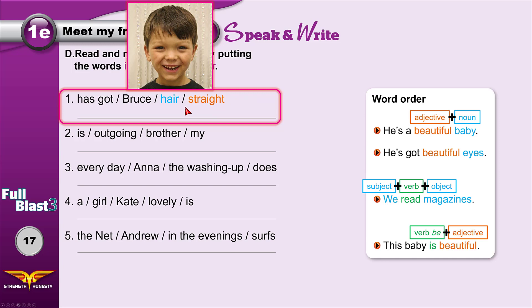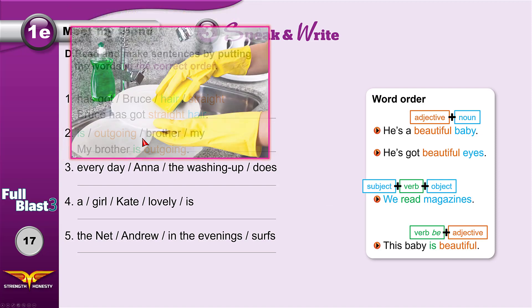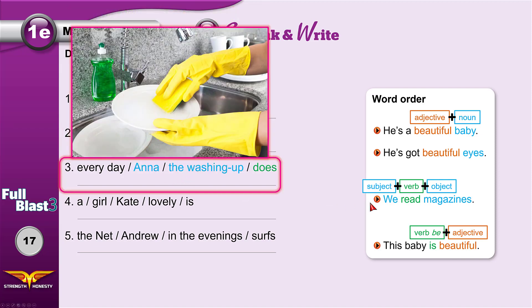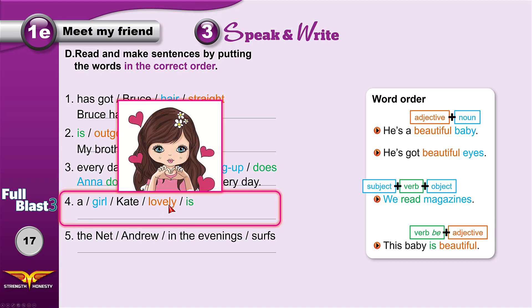We have hair which is a noun and straight which is an adjective, so the adjective goes first: straight hair. Bruce has got straight hair. My brother is outgoing. Lovely is an adjective which means beautiful — Kate is a lovely girl.